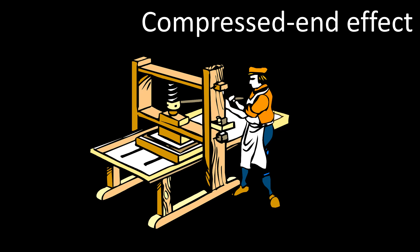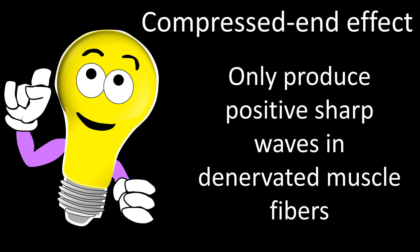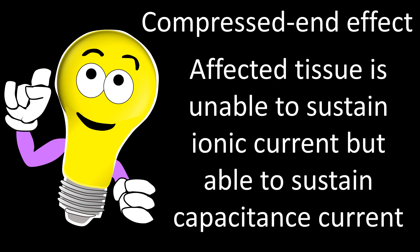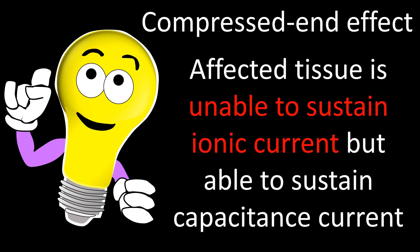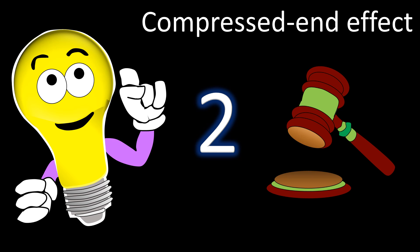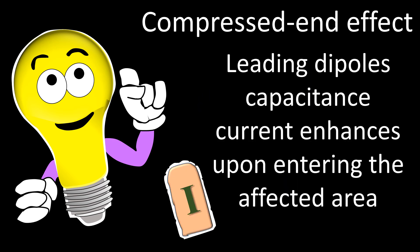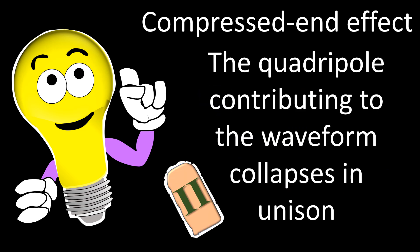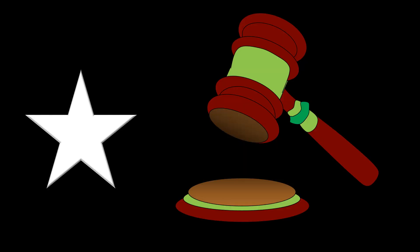Now for compressed-N effect — two facts. First, unlike sealed-N effect, compressed-N effect only produces positive sharp waves in denervated muscle fibers. Second, the segment of muscle fiber affected by the compressive-N effect is unable to sustain ionic current — implying sodium and potassium voltage-gated channel dysfunction or calcium-activated potassium channel dysfunction — but is able to sustain capacitance current. Two rules governing compressed-N effect: rule number one, leading dipole capacitance current enhances upon entering the affected area; rule number two, a quadrupole entering an area affected by the compressed-N effect collapses in unison.